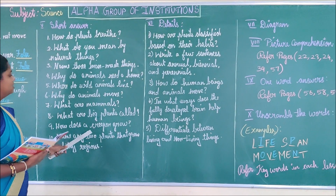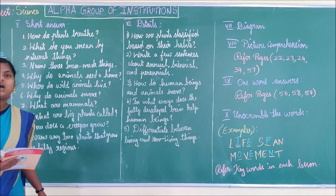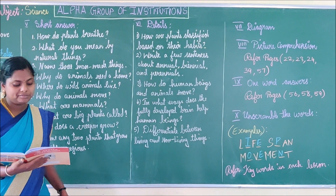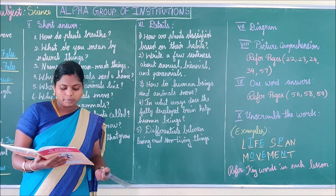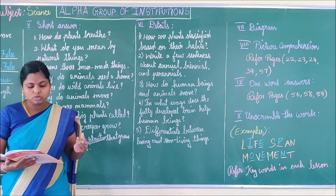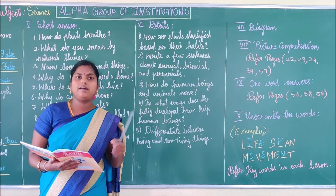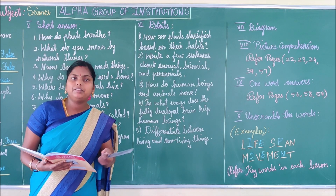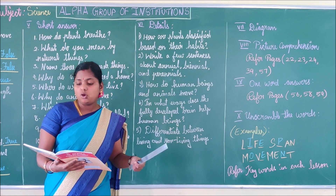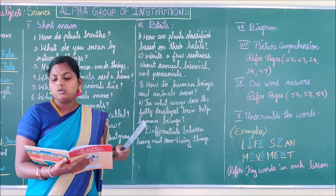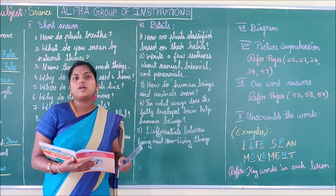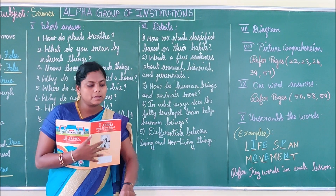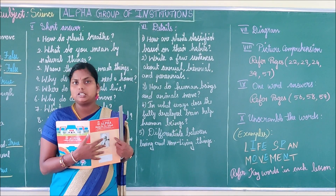Ninth question: How does a creeper grow? Creepers have stems which bear big and heavy fruits on them. Because of the heavy fruits, these plants creep along the ground.